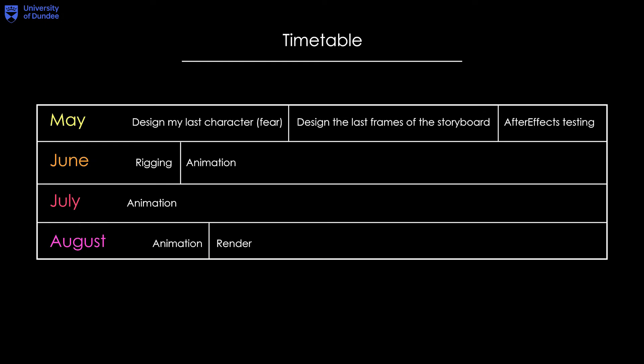The timetable. So far I have managed to finish my assets in Photoshop as well as the script and storyboard. By the beginning of the last semester I will create my last character and his poses ready for the video. I will also correct the last two frames of my storyboard and proceed to testing in After Effects. In June I will do the rigging and start editing the final footage. July and August are the last months, dedicated to animation and rendering.